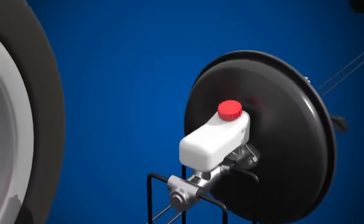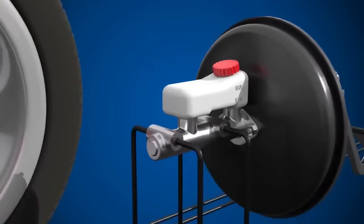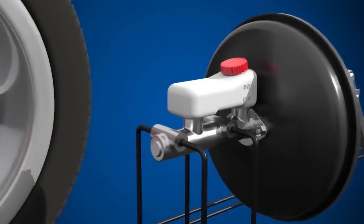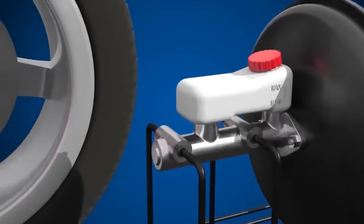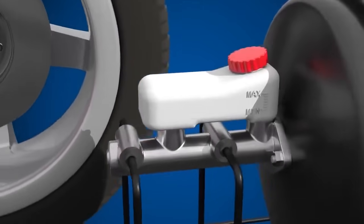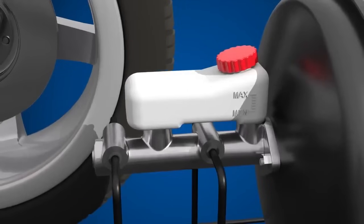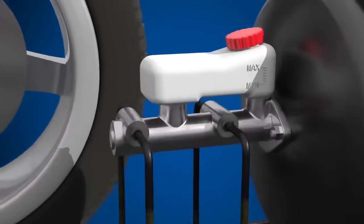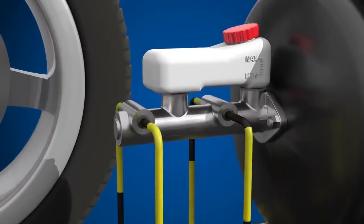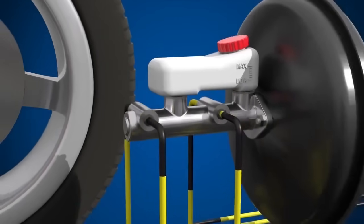The master cylinder converts non-hydraulic pressure from the driver's foot on the brake pedal into hydraulic pressure. When braking, pistons with seals and springs in the master cylinder create hydraulic force which pressurizes the entire hydraulic system. Brake fluid returns to the master cylinder when pressure is released.